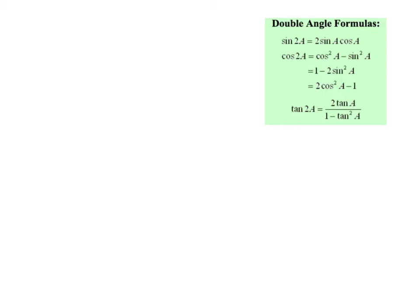You're going to want to pause this and copy these formulas down. Note that these formulas are given to us on our exam — you do not have to memorize them, though you'll use them enough that you might start to. There are a whole bunch of double angle formulas. For sine, I only have one. For cosine of 2A, I have three different options to choose from — we'll want to pick the smartest one. And for tangent, I only have one option, though it looks the ugliest.